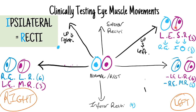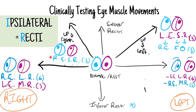If we ask our patient to look up and right, we start with the ipsilateral eye - the right eye. That's looking upwards, so that's your superior rectus. For the left eye, it's the opposite: inferior oblique.